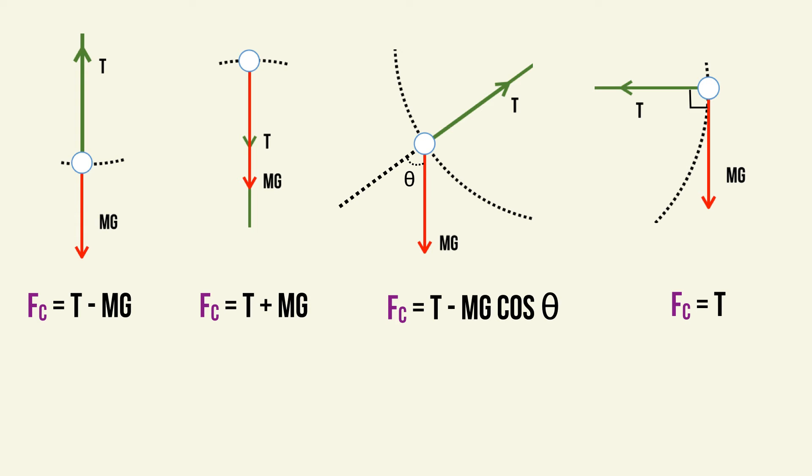As the object undergoes vertical circular motion at a position that is at an angle theta to the vertical, we must find the radial component of the weight, which is mg cos θ. The tension and this radial component of the weight are the two components of the radial resultant force. Therefore, the centripetal force equals T minus mg cos θ. In the fourth situation, when the object is at a right angle to the horizontal, the only radial component acting on the object is the tension — the weight has no component towards the center of the circle.